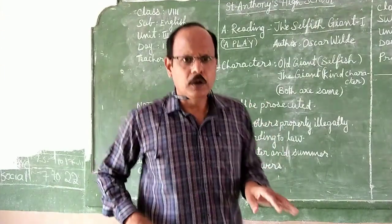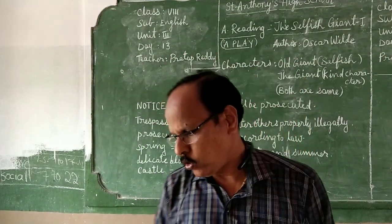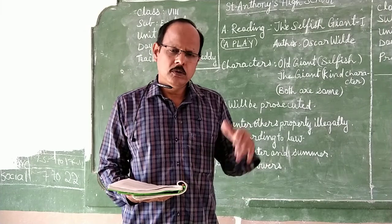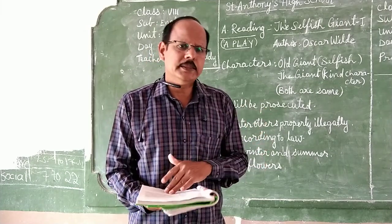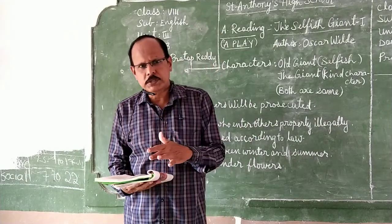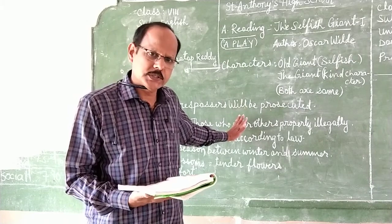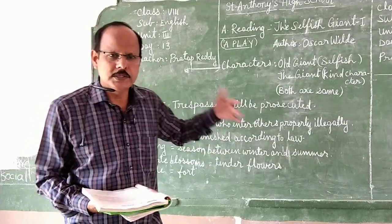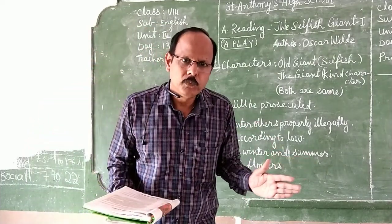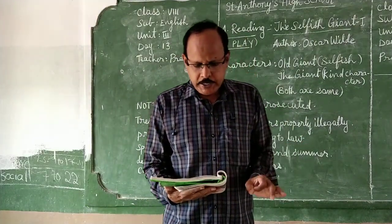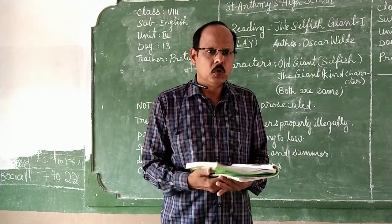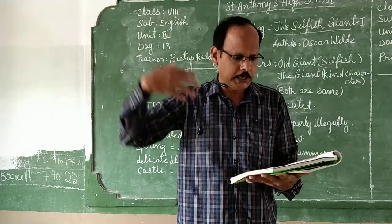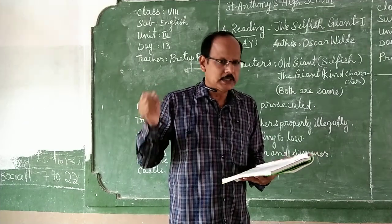Now, those who have textbooks, open them. Some of you have old books — open those books and let's read and explain the lesson. You follow the lesson in your course, and I have also written some meanings. If you don't know the meanings, you can look at the core, know the meaning, and you can easily understand the lesson. Are you ready? Now, an Old Giant addresses the audience directly. The selfish Giant comes to the stage and speaks to the audience who are watching the play.